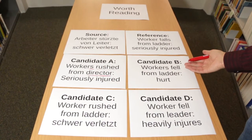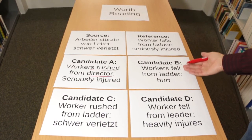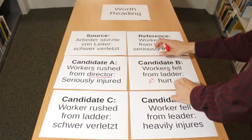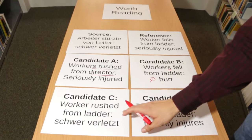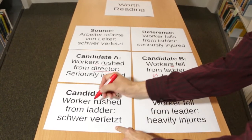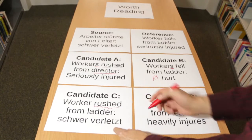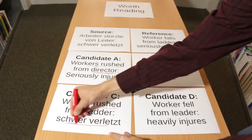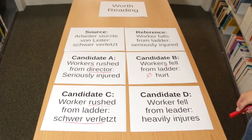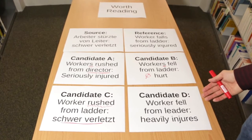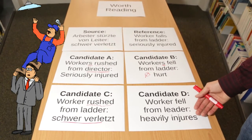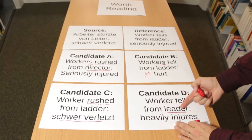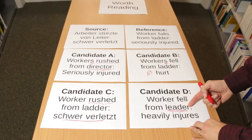Candidate B says "Workers fell from ladder, hard." This is almost fine except for the plural, and there is missing information about the seriousness of the injury. If you look at Candidate C, "Worker rushed from ladder," the lexical choice is disagreeable, and then the main problem comes: "schwer verletzt" — there is an untranslated part of the sentence. Candidate D is also very interesting. It says "Worker fell from ladder, heavily injurious." The word is superficially similar — it looks like a typo, but it is actually a bad lexical choice.